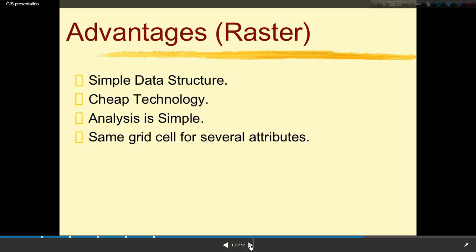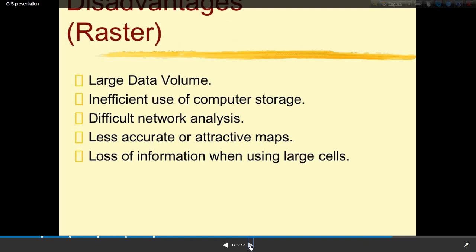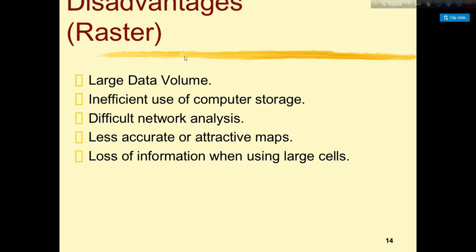The main advantages of raster data are simple data structure, cheap technology, simple analysis, and the same grid cell can be used for different attributes. The main disadvantages of raster data are large data volume, inefficient use of computers, difficult network analysis, less accurate maps, and loss of information when using large cell sizes.